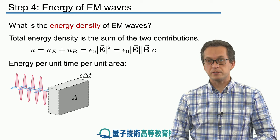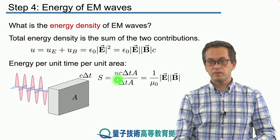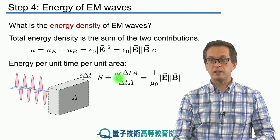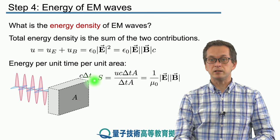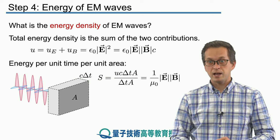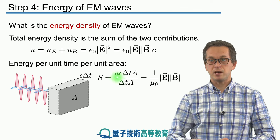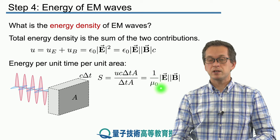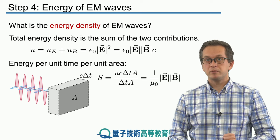Let's call this quantity S. It is given by the total energy, which is our energy density times the volume. The energy density is u, and the volume is given by c times delta t times A. We are interested in the total energy passing through area A per unit time, so we divide by delta t times A. What we get is the following expression: 1 over mu naught times the magnitude of E times the magnitude of B.